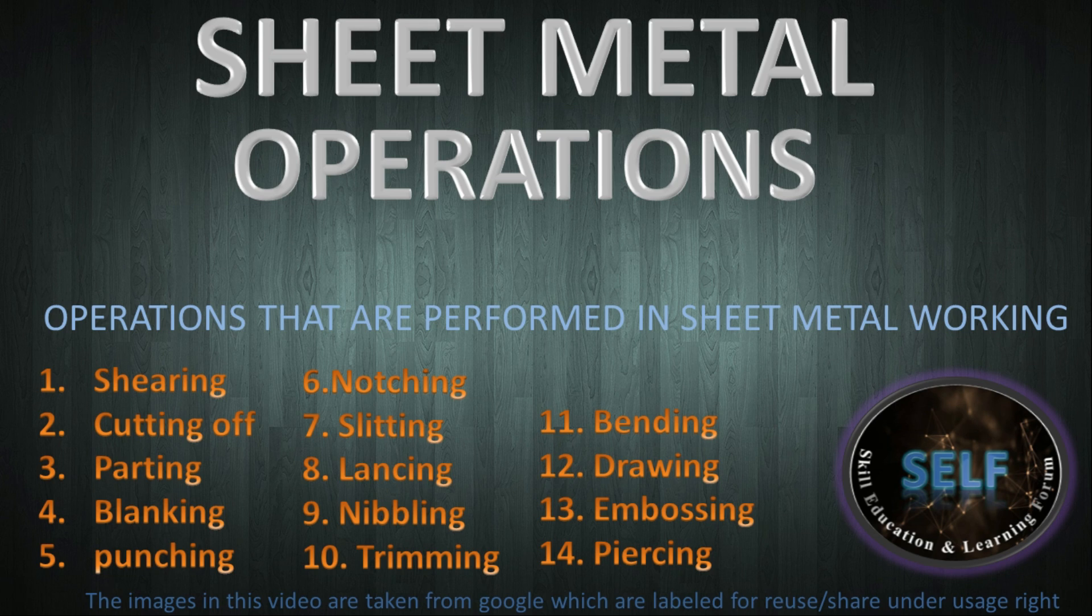In general, sheet metal operations are shearing, cutting off, parting, blanking, punching, notching, slitting, lancing, nibbling, trimming, bending, drawing, embossing, and piercing. Let's discuss one by one.